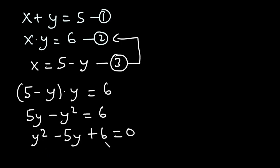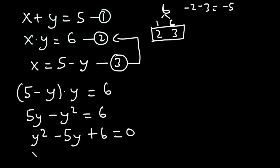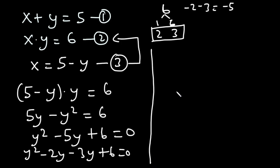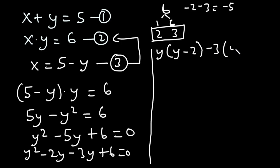The constant is six, and one times six equals six. The factors of six are one and six, and two and three. We need values that multiply to six and add up to negative five: negative two minus three equals negative five, so we select negative two and negative three. The equation expands to y squared minus two y minus three y plus six equals zero. Factoring: the GCF between y squared and negative two y is y, giving y(y minus two) minus three(y minus two) equals zero, so (y minus three)(y minus two) equals zero.